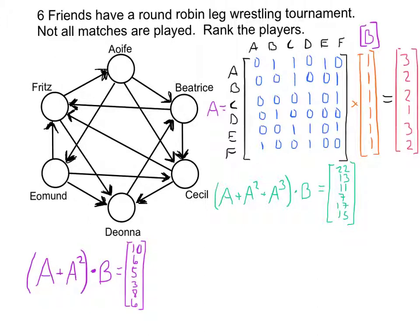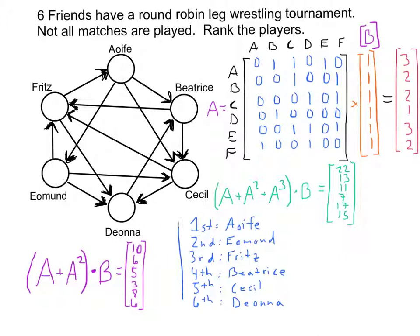Each one of these numbers is now unique, so I have a ranking for all of these players. Apha came in first, Eamon came in second, and so on. There we have it. This is a way of using matrices to come up with a unique ranking for this kind of tie-breaking situation. There's nothing sacred about this way of doing things — we could apply different scalars — but this is going to be our general practice for right now. Please show how far you have to go until you break the tie. Thanks for watching — character and scholarship for life.